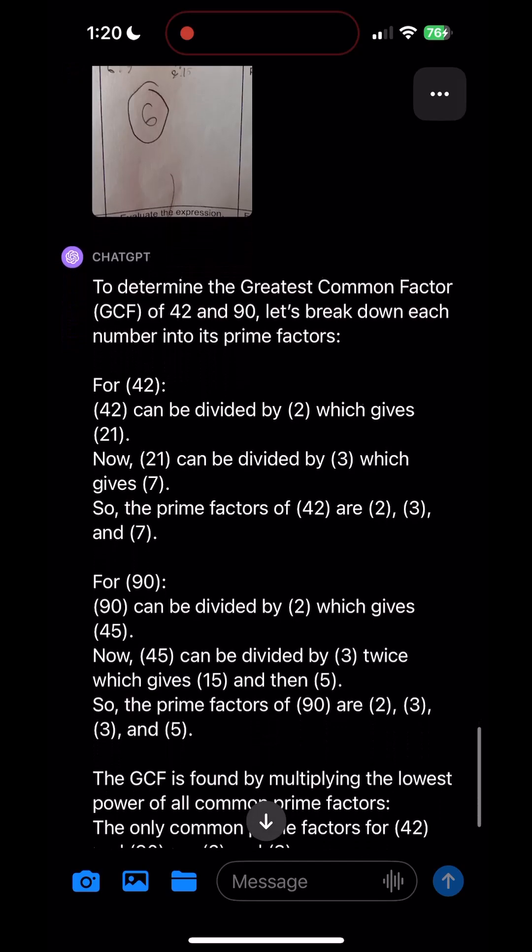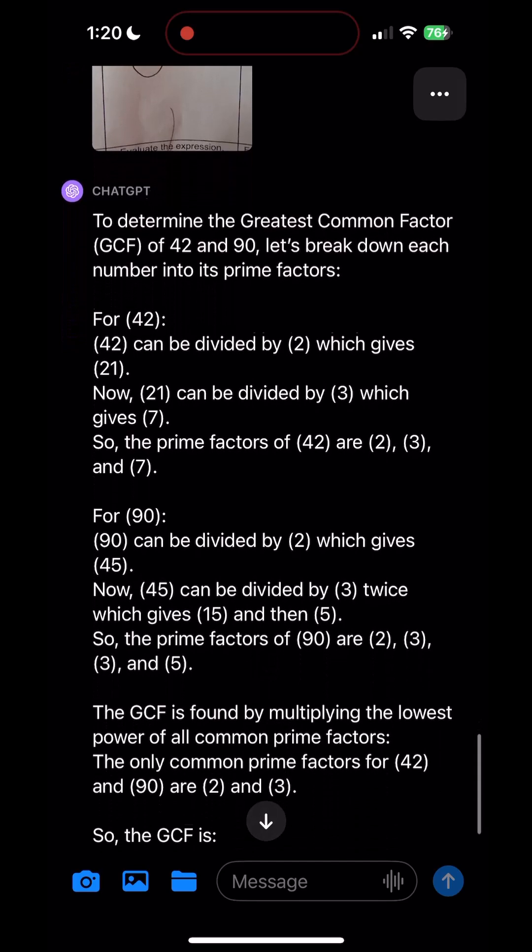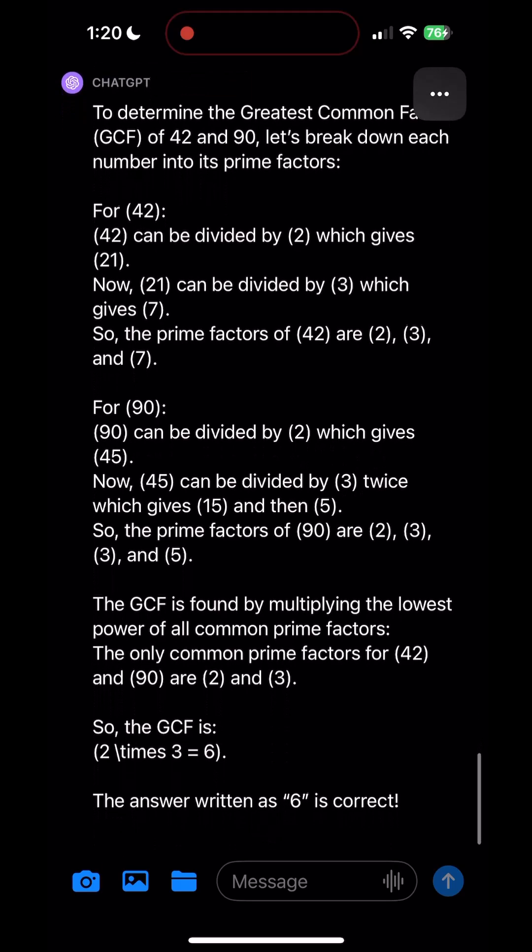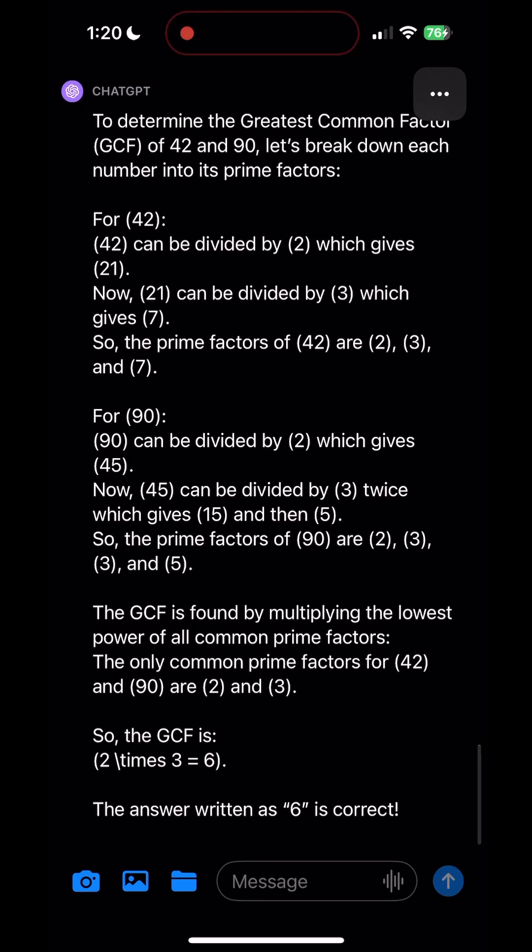It said, to determine the greatest common factor, GCF of 42 and 90, and then look, it breaks it down, explains to me how it did it all, which is helpful as a parent so I can explain to the kid if they get it wrong. And then it kept going.